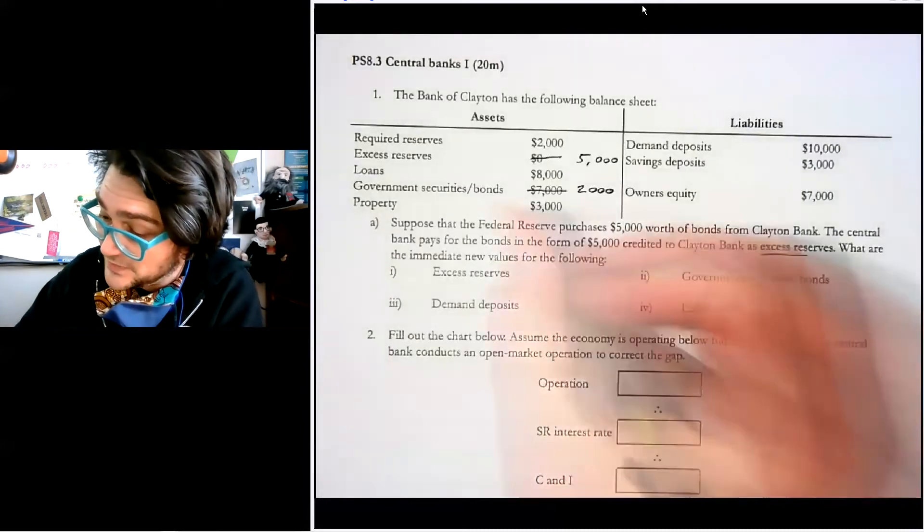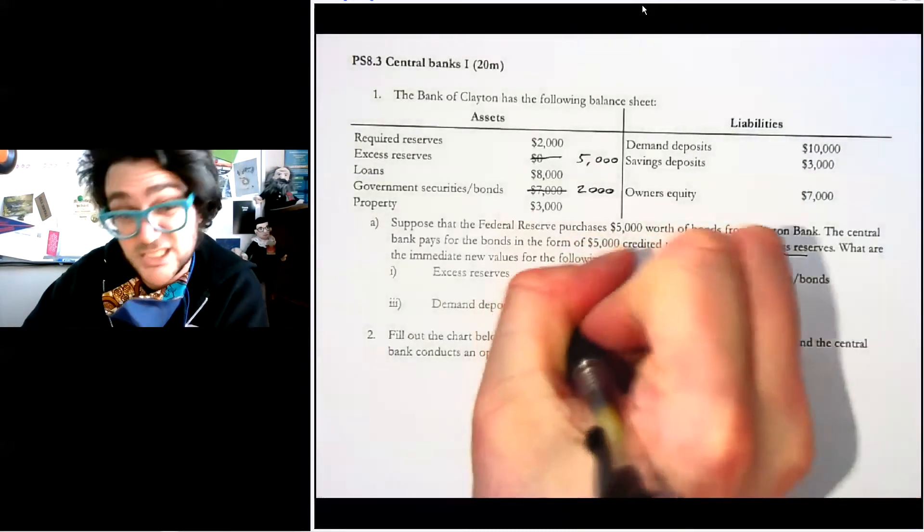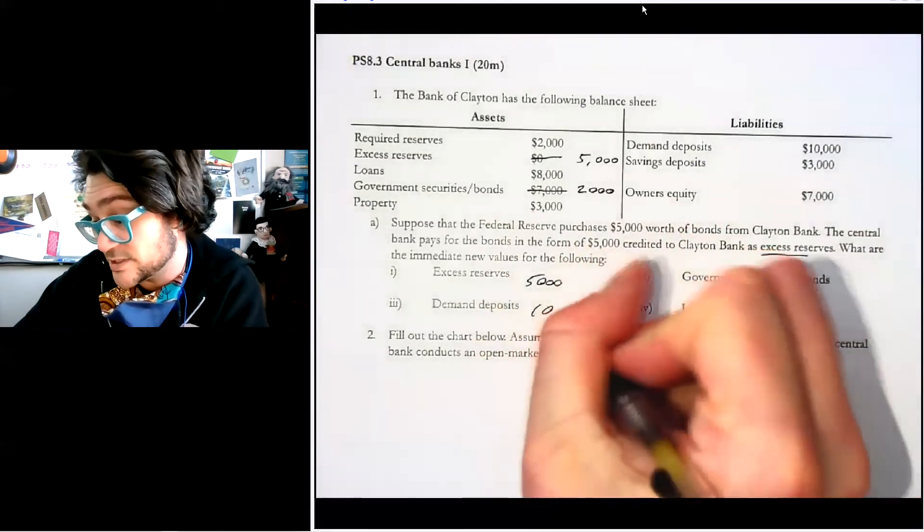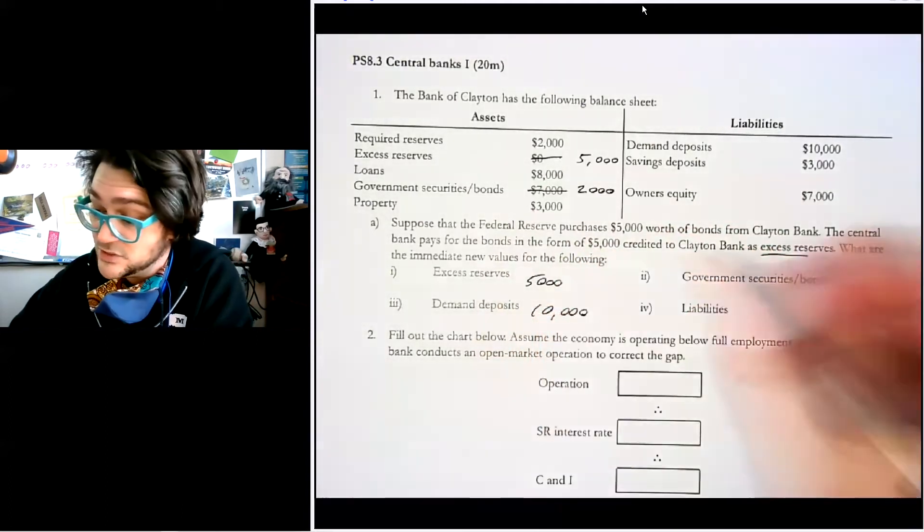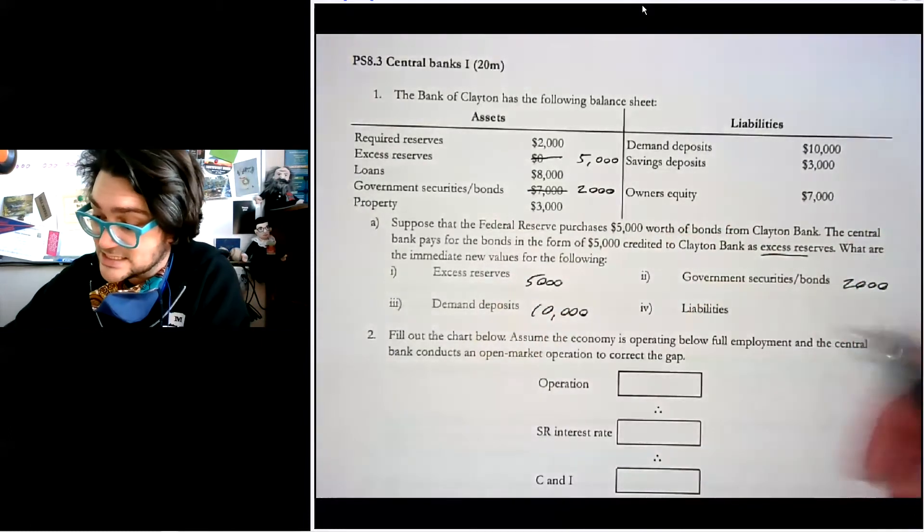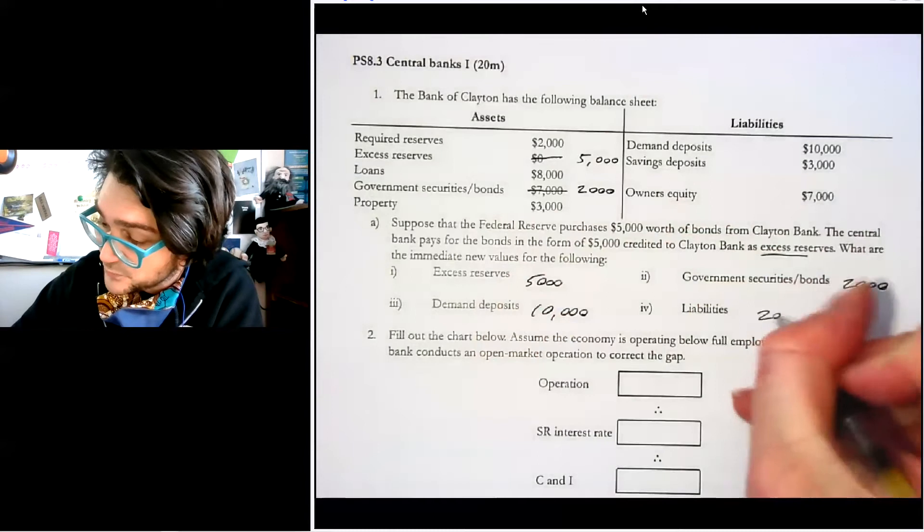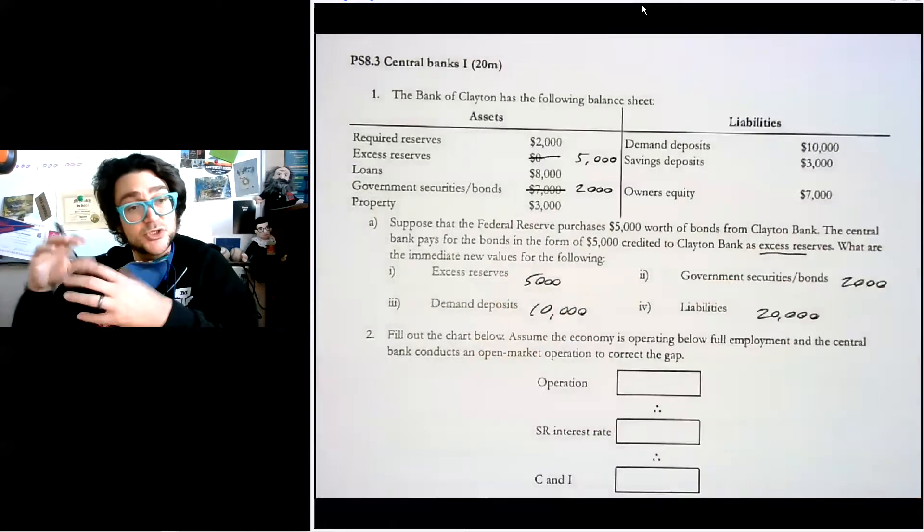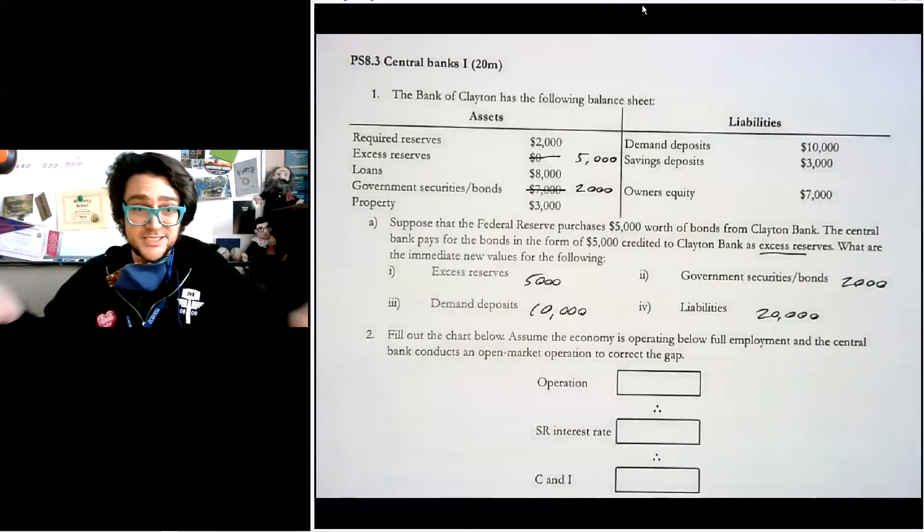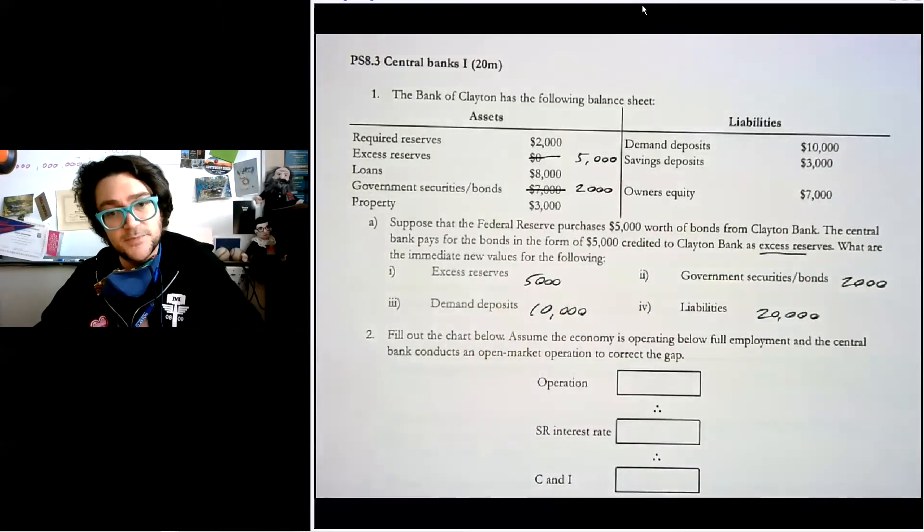So the new amount of excess reserves is 5,000 because they started with nothing. The new amount of demand deposits is the same as it was before, 10,000. The new amount of bonds is now 2,000. And the total amount of liabilities is still what we have, which is $20,000. So the total amount of assets and the total amount of liabilities don't really change because it's just moving money from one side of the assets to another.